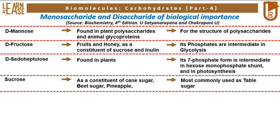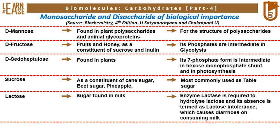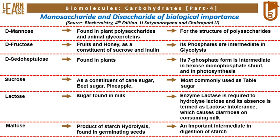Sucrose is a major constituent of cane sugar, beet sugar, pineapple, etc., and is most commonly used as table sugar. Lactose is a sugar found in milk; the enzyme lactase is required to hydrolyze lactose, and its absence is termed lactose intolerance, which causes diarrhea on consumption of milk. Maltose is a product of starch hydrolysis found in germinating seeds, and it is an important intermediate in the digestion of starch.